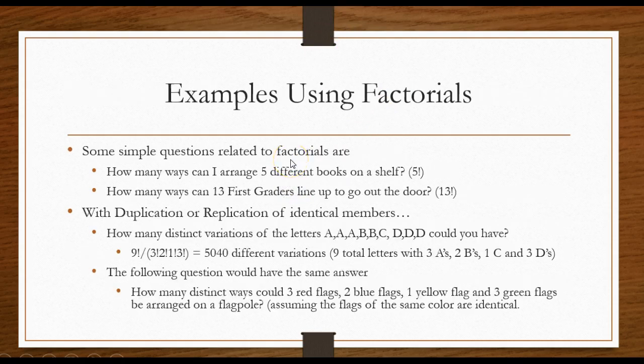Here's some other examples using factorials. How many ways can I arrange five different books on a shelf? Five factorial, which is 120. How many ways can 13 first graders line up to go out the door? 13 factorial. I'm not sure what that is. Put it in your calculator. It would be a big number.